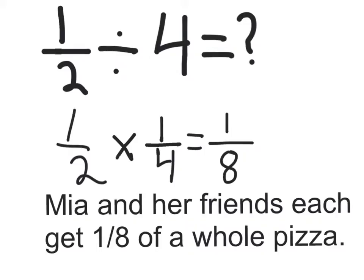So, the equation for the problem will be one half divided by four. It will be this because it's half of a pizza divided by Mia plus her three friends. One plus three is four.